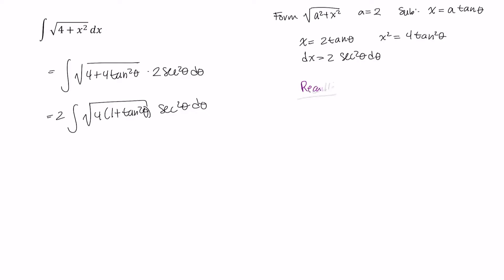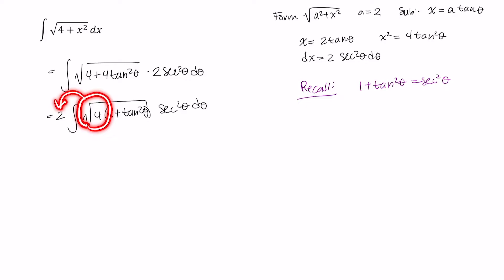I have 4 times the square root of 1 plus tangent squared theta, times secant squared theta d theta. Now recall, 1 plus tangent squared theta is equal to secant squared theta. So this 1 plus tangent squared theta can be replaced with secant squared theta. The square root of 4 comes out front as another constant — the square root of 4 is just 2 — giving 4 times the integral of the square root of secant squared theta times secant squared theta d theta.